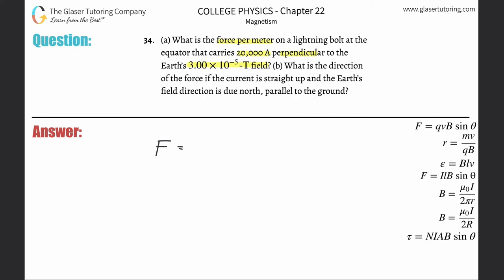The force on a wire carrying a current is going to be equal to the current itself multiplied by the length of the current, or the length of the wire, multiplied by the strength of the magnetic field, multiplied by the sine of the angle between the current and the magnetic field. The problem told us that the current is perpendicular to the magnetic field, so the sine of 90° is just 1, and you can cancel it.